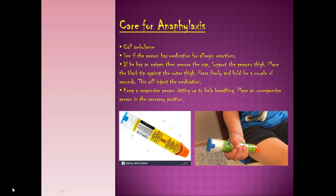Check if the person has medication for allergic reactions, such as antihistamine or an epi-pen. An epi-pen is an epinephrine auto-injector pre-dosed for the user. Remove the cap, support the person's thigh, and place the tip — orange or black depending on the model — on the outer thigh. Press firmly, hold for a couple of seconds, and it will inject the epinephrine. The person should start to feel better shortly.